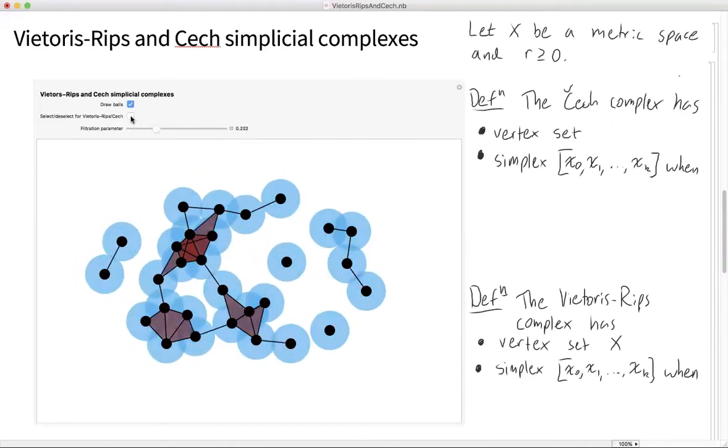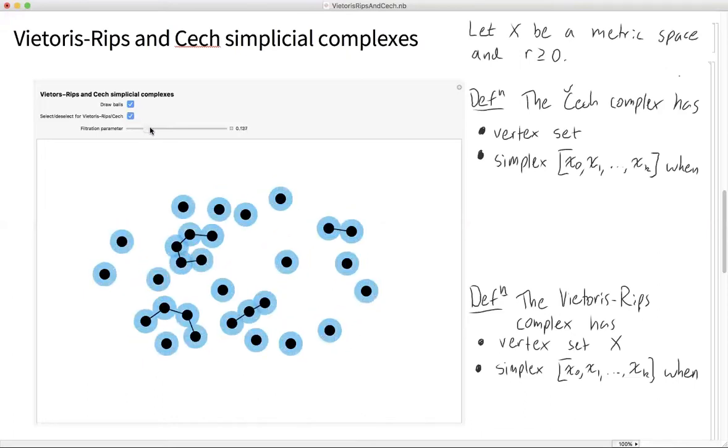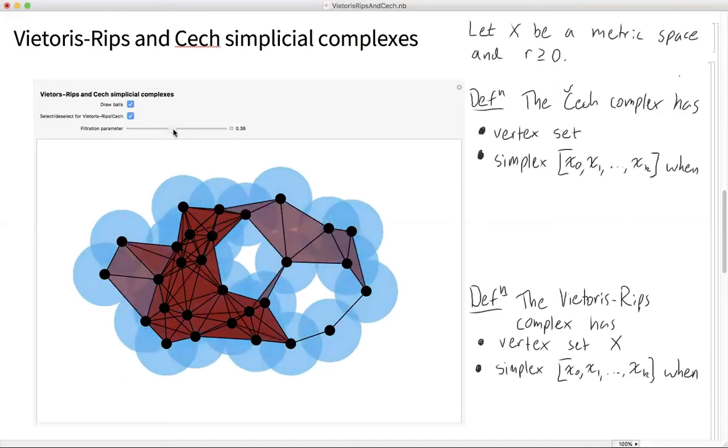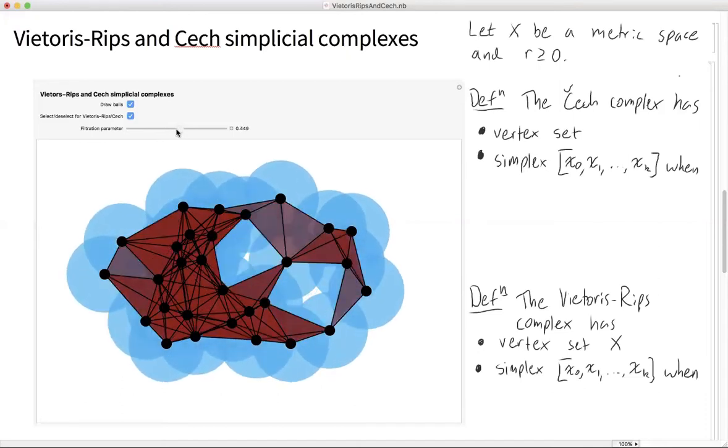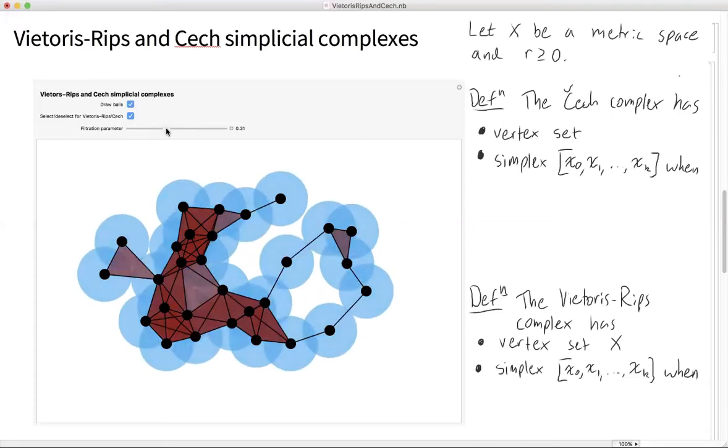You can select this button if you instead want to draw the Vietoris-Rips complex. And the Vietoris-Rips complex looks much the same as the Čech complex. As the balls grow, so does the Vietoris-Rips complex, but it's not clear what the difference between them is. And that's what I want to explain today.